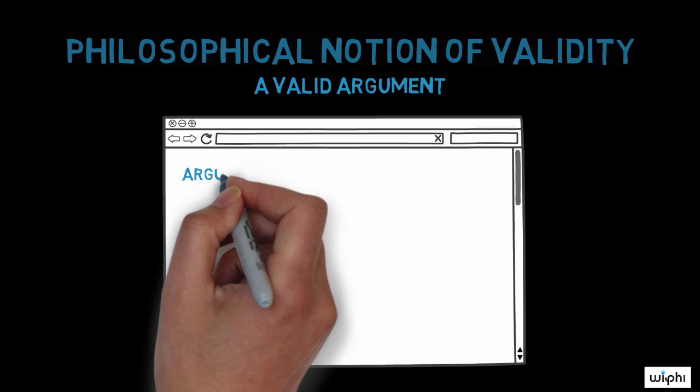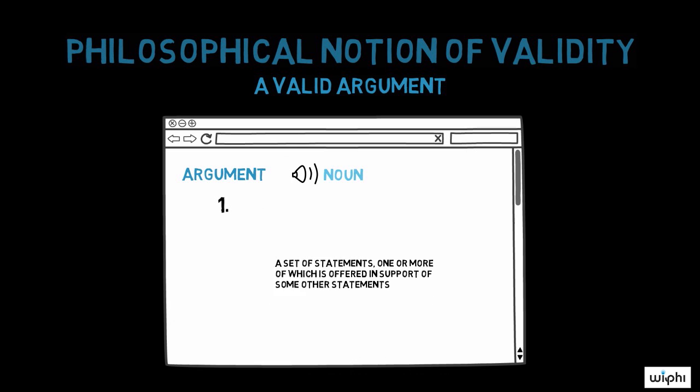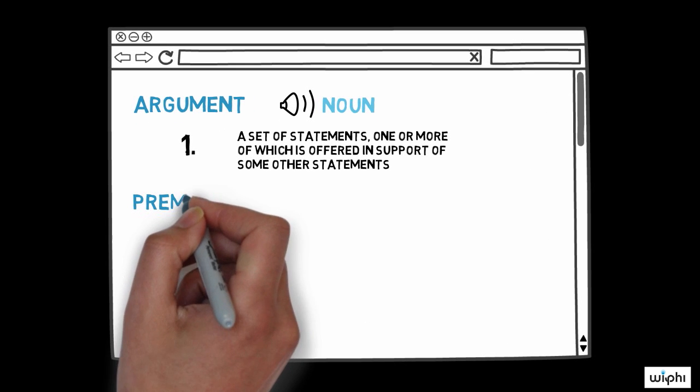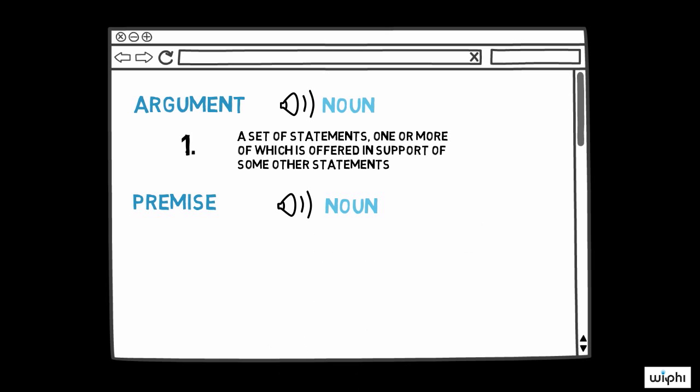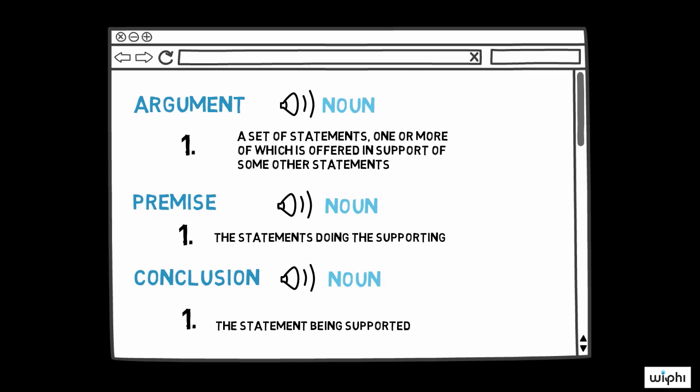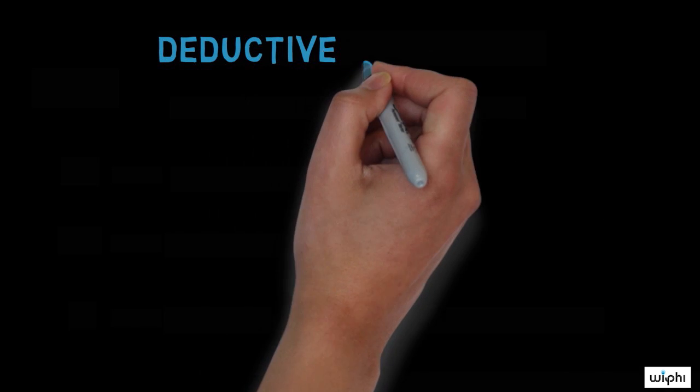You already know that an argument is a set of statements, and that one or more of these statements is offered in support of some other statements. The statements doing the supporting are called premises, and the statements being supported are called conclusions. Validity, in the sense that I'm talking about it, applies to deductive arguments.